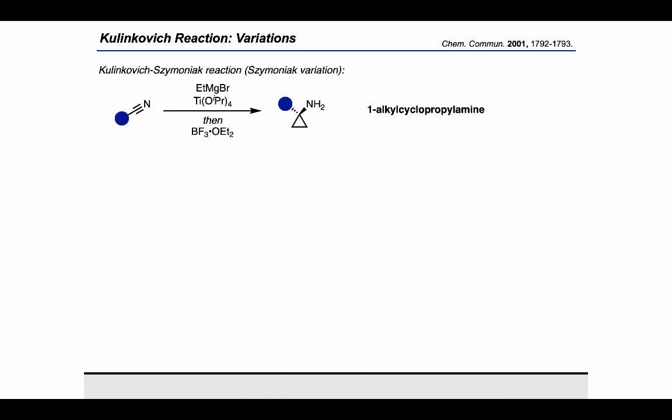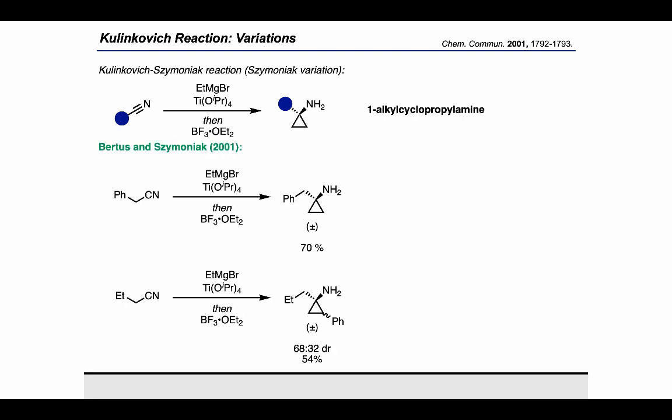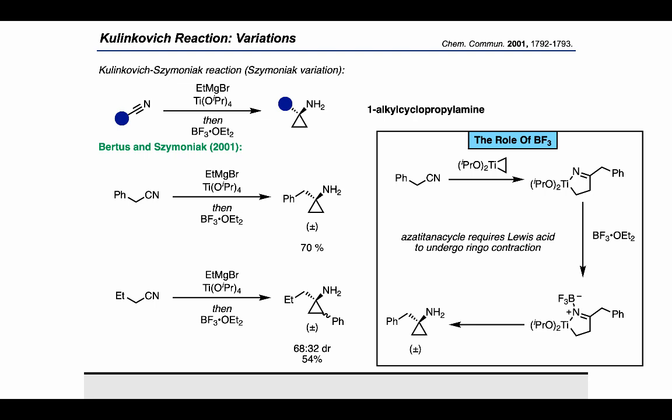Another interesting variation is the Kulinkovitch-Simoniac reaction. In this case, a starting material bearing a nitrile is treated with ethylmagnesium bromide and titanium tetraisopropoxide, followed by ethereal BF3, to form a cyclopropylamine. In examples from Virtus and Simoniac in 2001, the authors show that cyclopropylamines can be formed directly from simple nitrile-bearing starting materials. The role of BF3 is that the initial titanacyclopropane reacts with the nitrile to give an azatitanocycle, which requires BF3 as a Lewis acid in order to undergo the desired ring contraction, leading to cyclopropane formation.